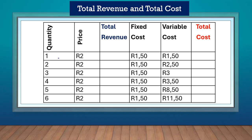One item multiplied by two rands will give us a revenue of two rands. Two items multiplied by two will give us four rands. Three items multiplied by two will give us a revenue of six rands. Four times two is eight. Five times two is ten. Six times two is twelve.